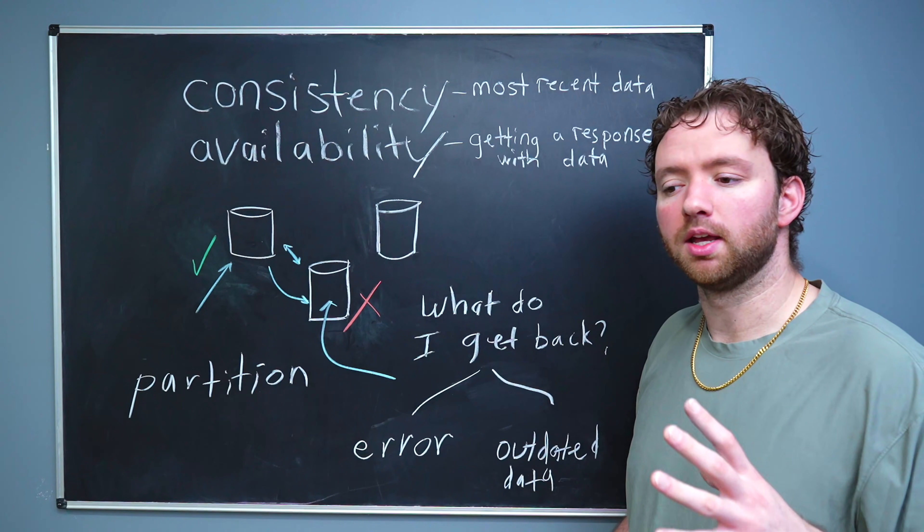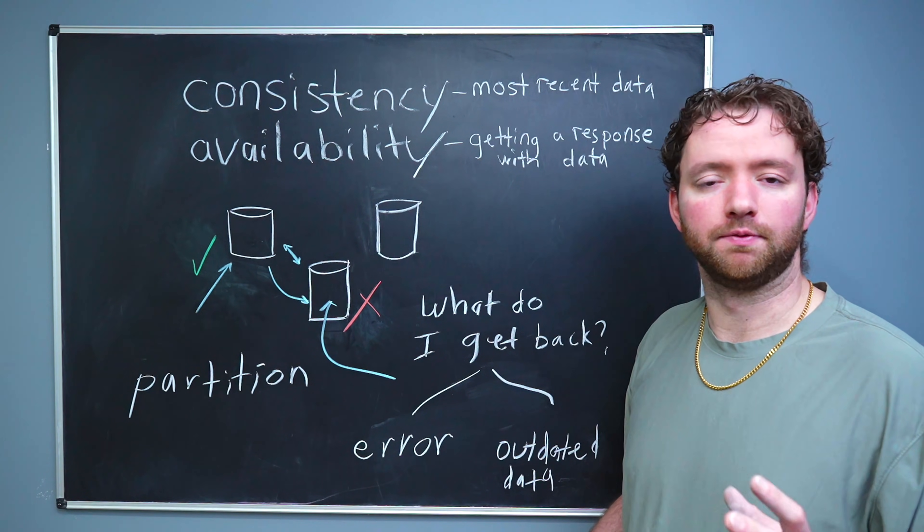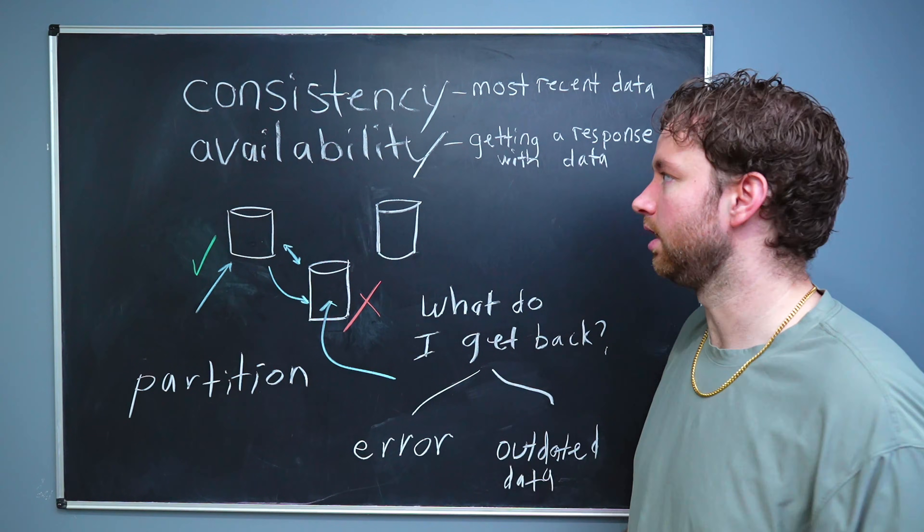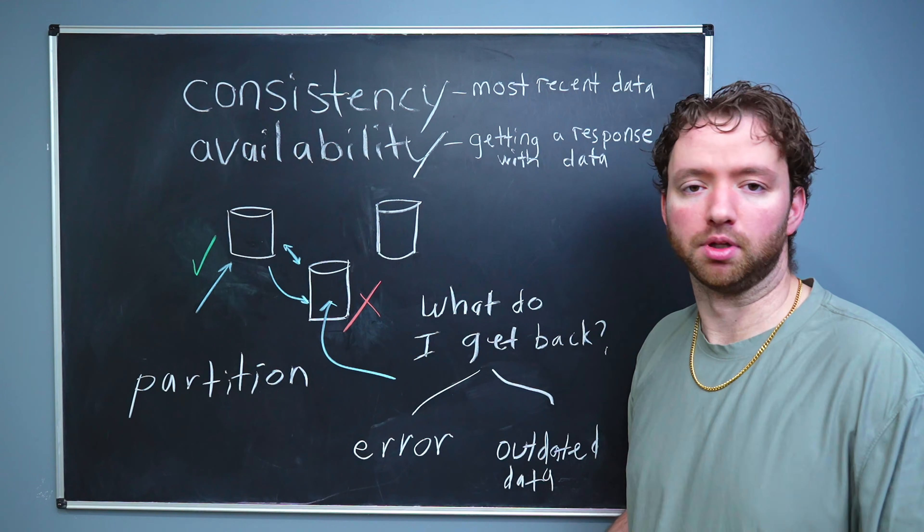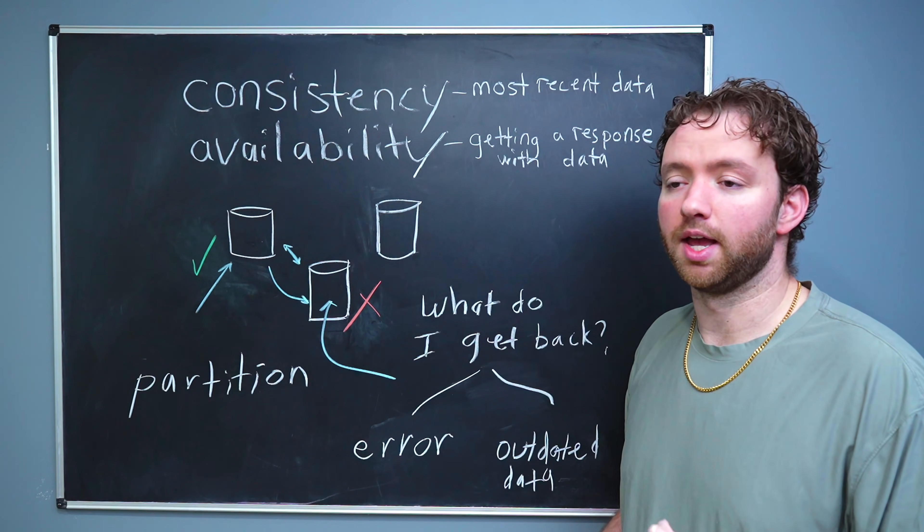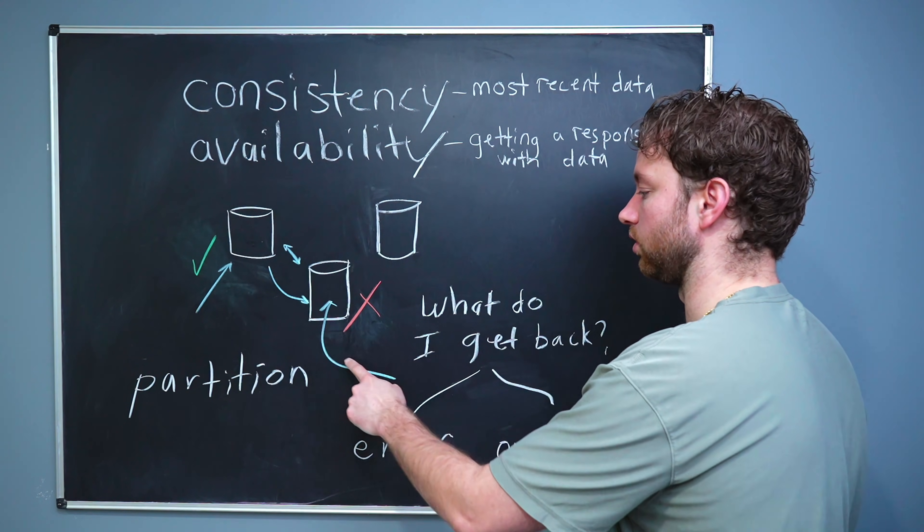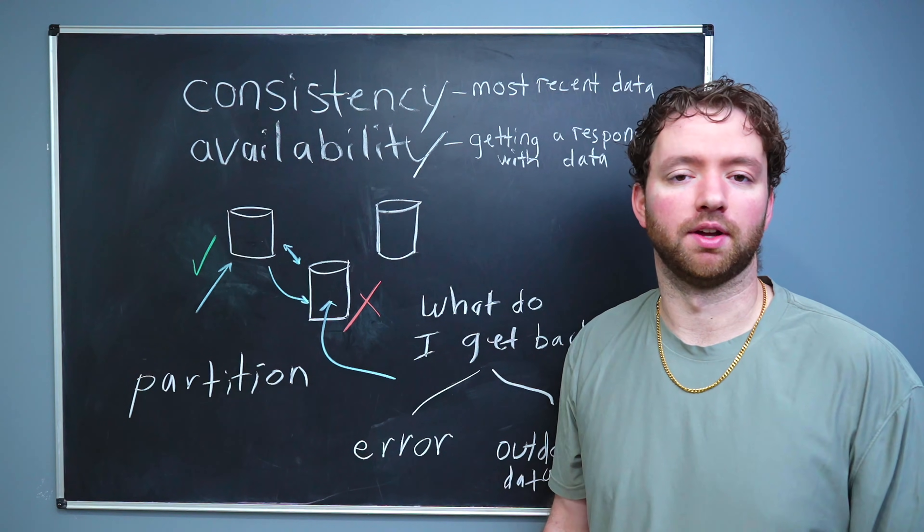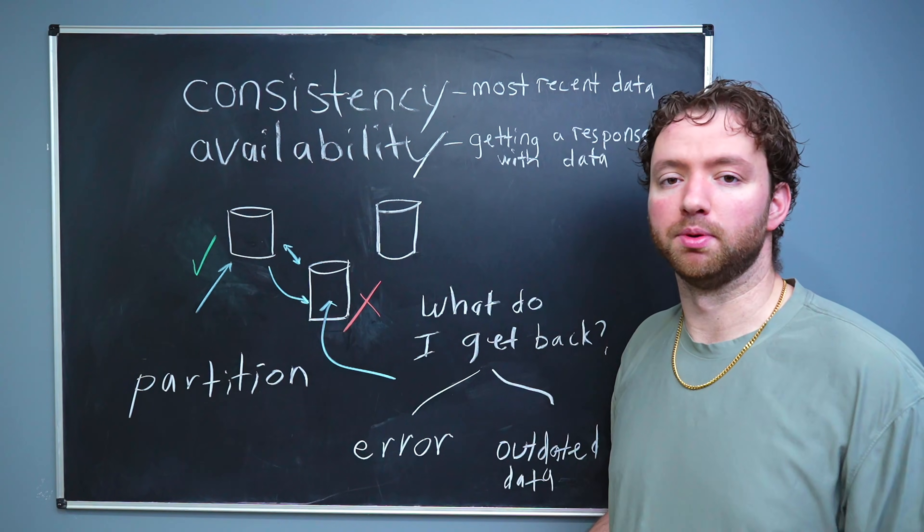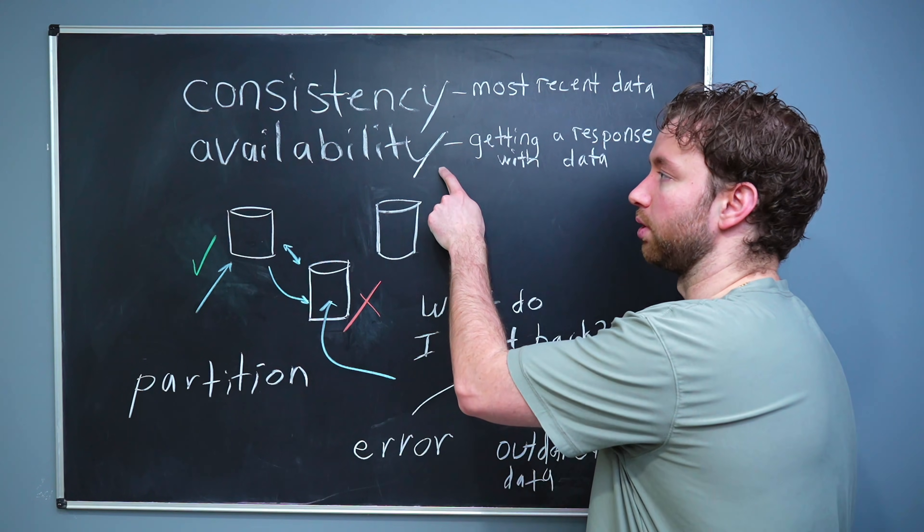If you're making an application that is not very serious, and it doesn't really matter if your data is a little bit outdated, you would probably prioritize availability. So for example, if you created a blogging platform, and there's a delay between when you create a blog and when that blog is actually showing up for a read, that's not a big problem. It might just take a little bit of extra time for that blog to show up in people's feed. So that would be a scenario where it makes a lot more sense to prioritize availability.